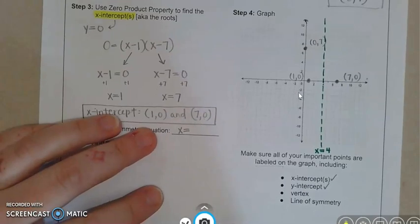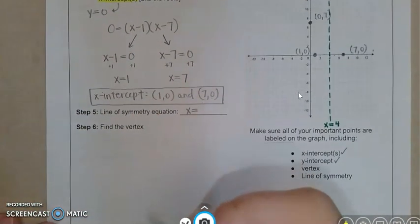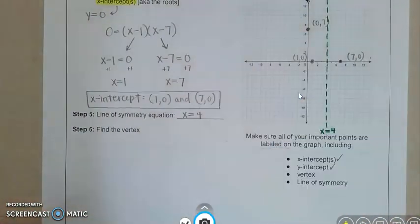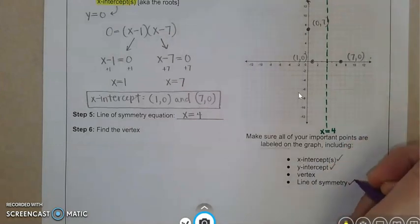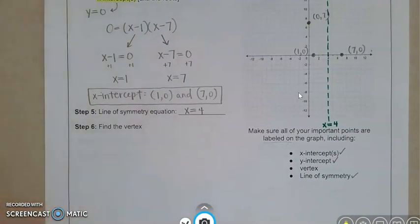So over here, the line of symmetry equation is x equals four. Line of symmetry done.